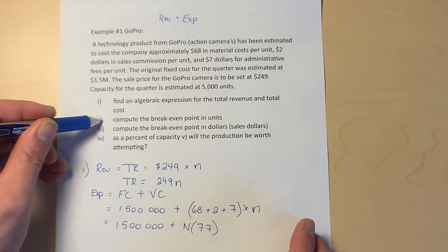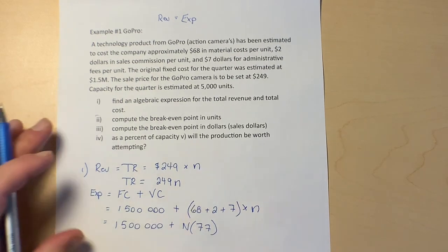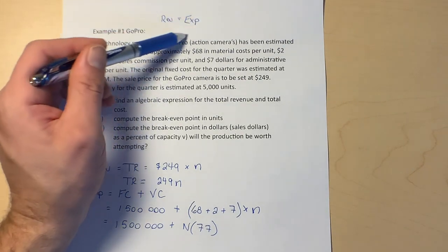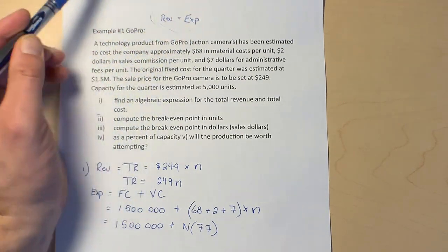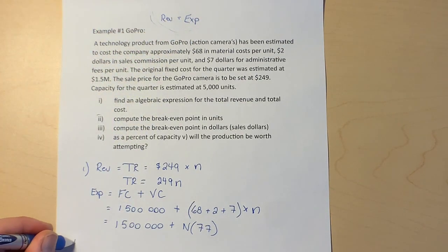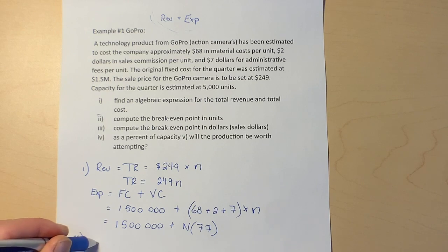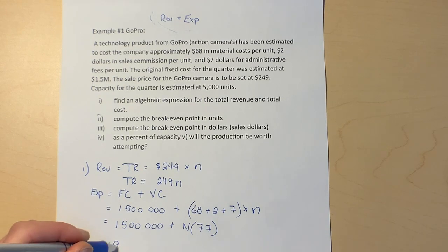In part two, it says we'll find the break-even in units. Well yeah, that's the next logical step. To do that, we're just remembering we're going back to this original thing here of revenue equals expenses. So in part two, we know that revenue is 249n.